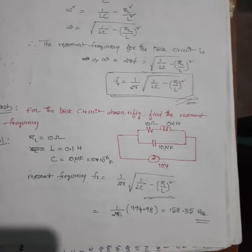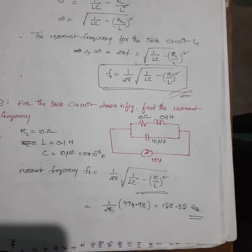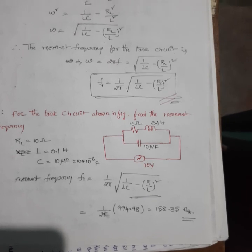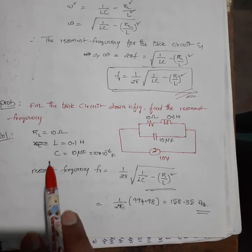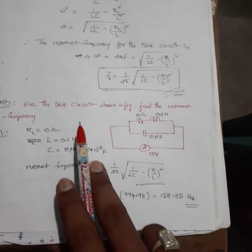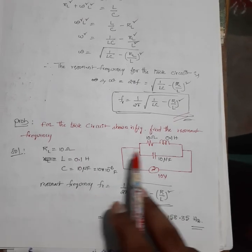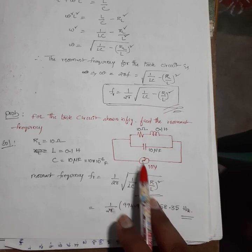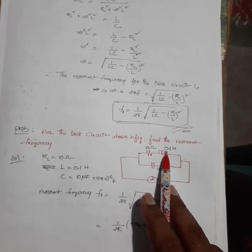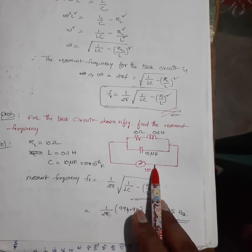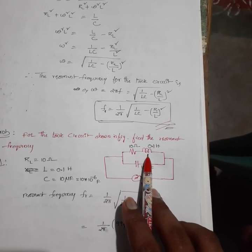Good morning everyone, this is Vengdesh. From the last video we know what anti-resonance and parallel resonance are for any type of circuit and the tank circuit. Here I am explaining a small problem: for the tank circuit as shown below, find the resonant frequency. The tank circuit consists of a resistor, inductor, and capacitor with values 10 ohms, 0.1 Henry, 10 microfarads, and 10 volts.